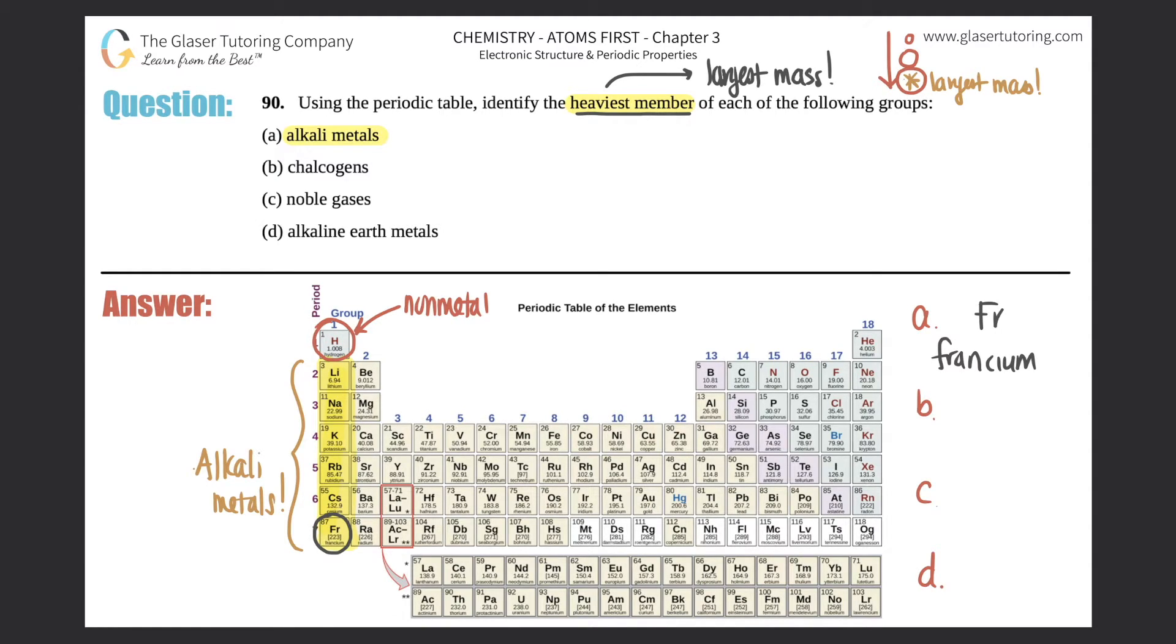Next we have chalcogens. Another way of saying chalcogens is just the oxygen group. You can name this group by the first element, so it's basically everybody below oxygen - oxygen and below, group number 16.